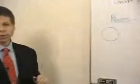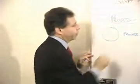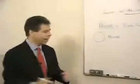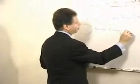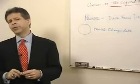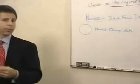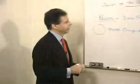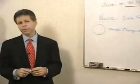A data flow diagram only has four symbols. The first symbol is called a process, which is a bubble. We define a process as something that changes data. When an invoice comes in and we pay it, we've changed data from an invoice to a check — we have transformed it. If you don't change data, then perhaps you don't really have a process.